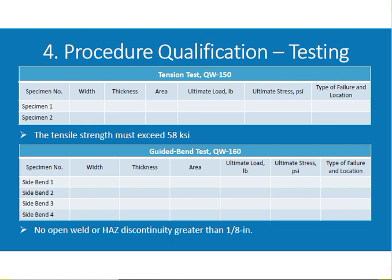Procedure qualification testing: two tensile test specimens per QW-150, four guide bend test specimens per QW-160. Acceptance criterion: no open weld discontinuity greater than 1/8 inch in the hatch area — it is not acceptable. No open weld discontinuity is allowed beyond that limit.